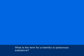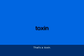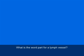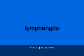What is the term for a harmful or poisonous substance? That's a toxin. What is the word part for a lymph vessel? That's lymphangio.